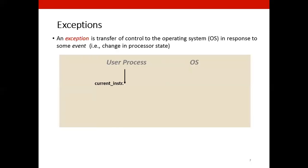So what is an exception? An exception is basically a transfer of control to the operating system in response to some event. That is in response to changes in the processor state. So we have this user process. And what is the process? It is a program being executed in the RAM.